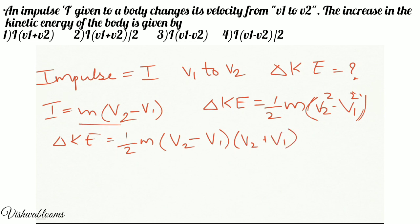Now instead of M into V2 minus V1 I am going to write impulse. Instead of this I will write I, impulse. So change in kinetic energy is equal to half into I into V2 plus V1.